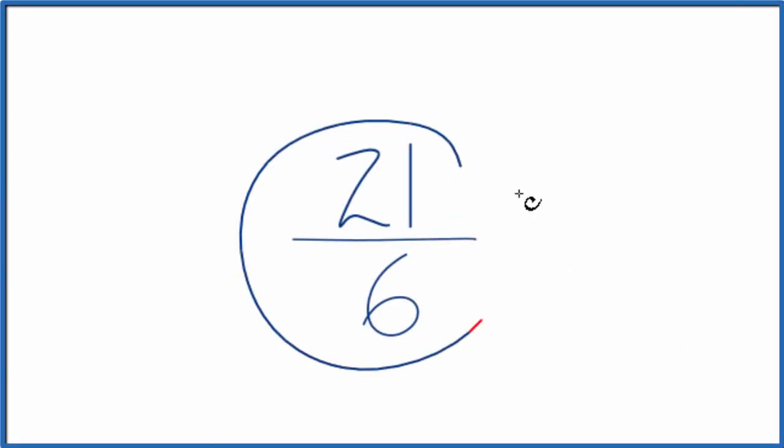Let's simplify the fraction 21 sixths. And here's how we're going to do it. We want to find another fraction that's equivalent, equal to 21 over 6, just that we've simplified or reduced it to lowest terms.